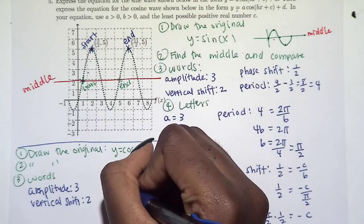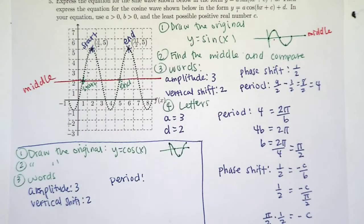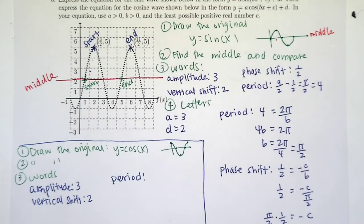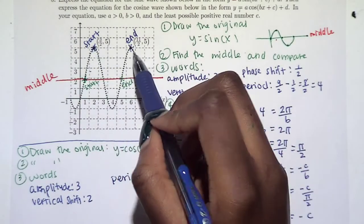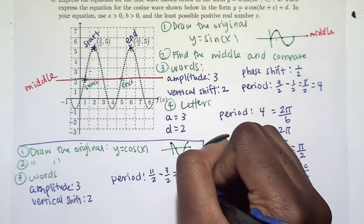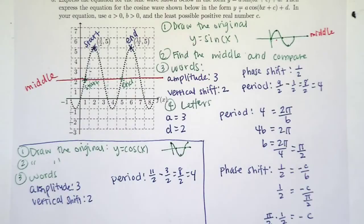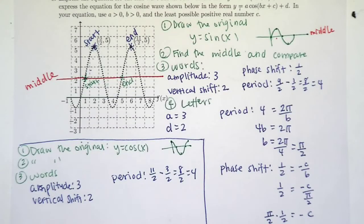All right, let's look at the period next. So the period of this graph, how long it takes to repeat, well, we start here, end here, we can just subtract them. This should look very familiar, same period as with the sine graph.